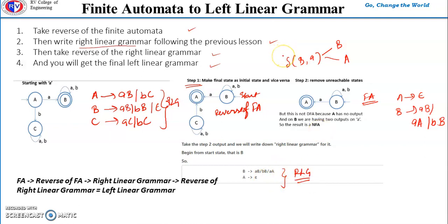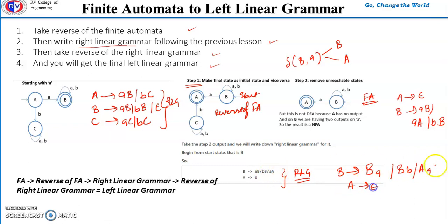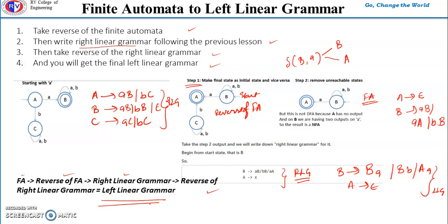Now we want left linear grammar, so in step three we reverse this right linear grammar. A → aB becomes B → Ba. B → bB becomes B → Bb. B → aA becomes A → Aa. And A → ε stays as A → ε. This is the left linear grammar. So: reverse the finite automata, write the right linear grammar for it, then reverse that grammar — the result is the final left linear grammar.